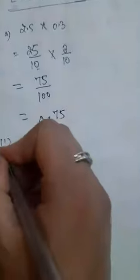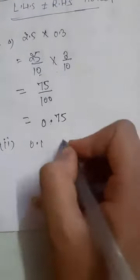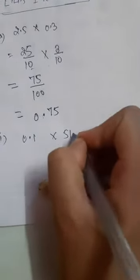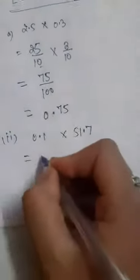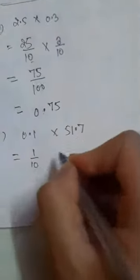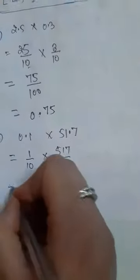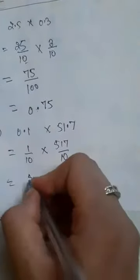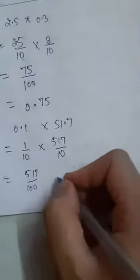Now, second part is 0.1 multiplied by 551.7, which equals 1 divided by 10 into 517 by 10, which is equals to 517 divided by 100.